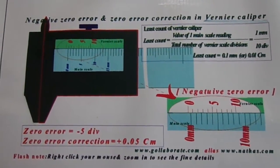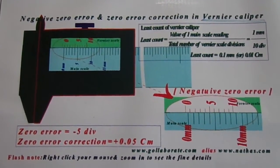Hi, in this video we are about to see the negative zero error and its error correction in a Vernier caliper.